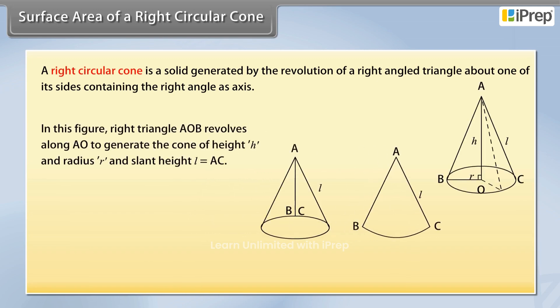In this figure, right triangle AOB revolves along AO to generate the cone of height H and radius R and slant height L equals AC. To find the total surface of a cone, let us cut it along its slant height and spread it into a sector ABC.